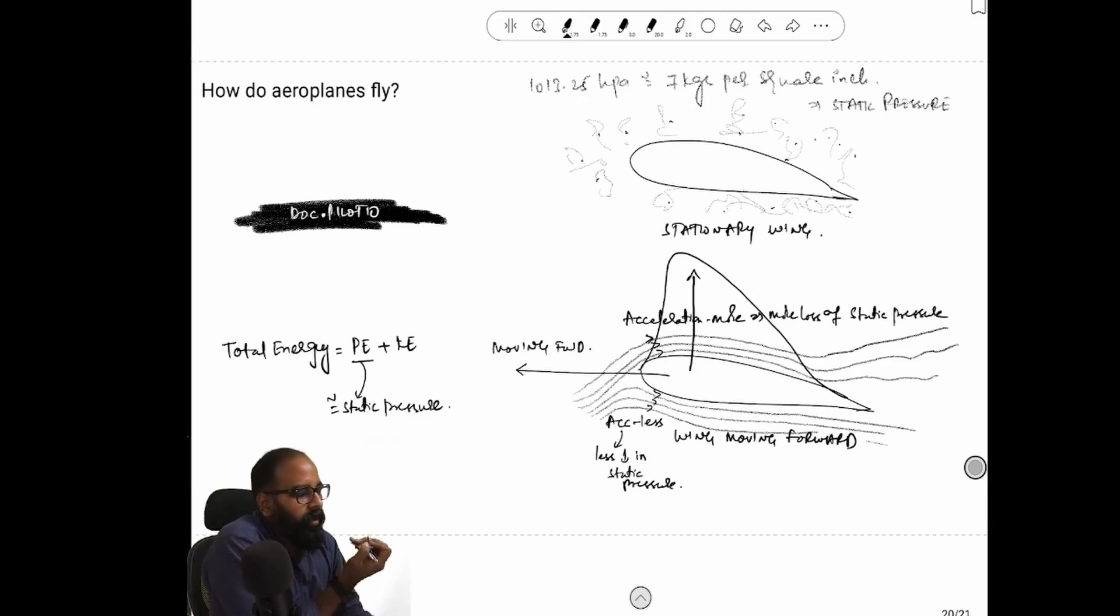Imagine an aircraft is sitting on the runway and this is the cross section of the wing I have represented here. Now when the aircraft is sitting on the runway and not moving, the air molecules around the wing are in random motion. They hit the wing randomly but the total movement of the air molecules is constant because there is no wind.